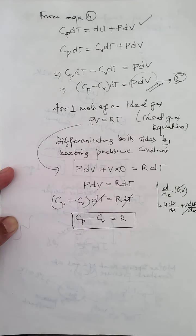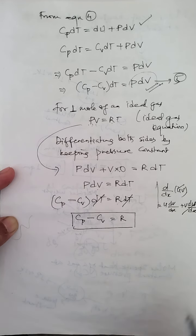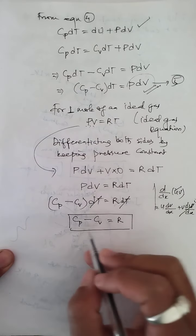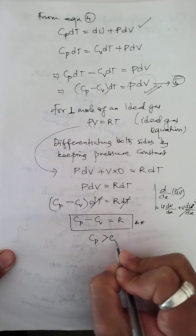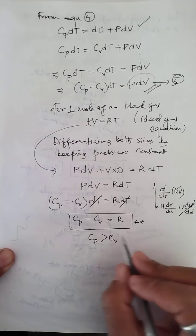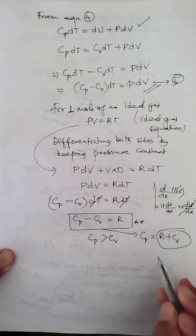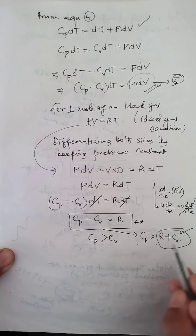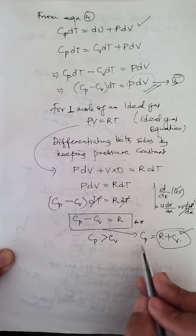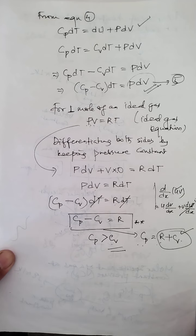This is a very important relation for an ideal gas: Cp − Cv = R, where R is the universal molar gas constant. The required relation is Cp − Cv = R. Also note that Cp is always greater than Cv, because Cp = R + Cv, and since R is always positive, Cp must be greater than Cv. The reason why Cp is greater than Cv will be explained in the next video.